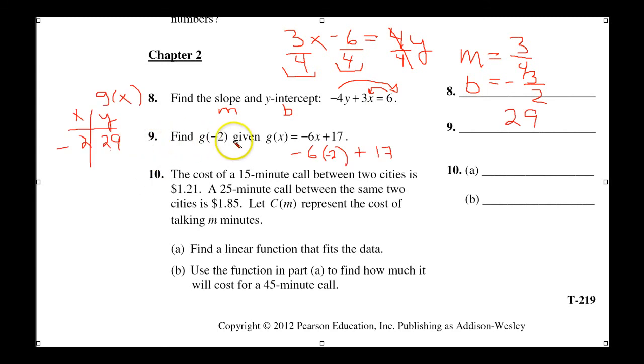In number 9, we're dealing a little bit with function notation. This is our function. We said we can always substitute the letter y for function notation. y equals this. This is our x value. We put it in a little t-chart. So our x is a negative 2. So negative 6 times negative 2 is 12. 12 plus 17 is 29.